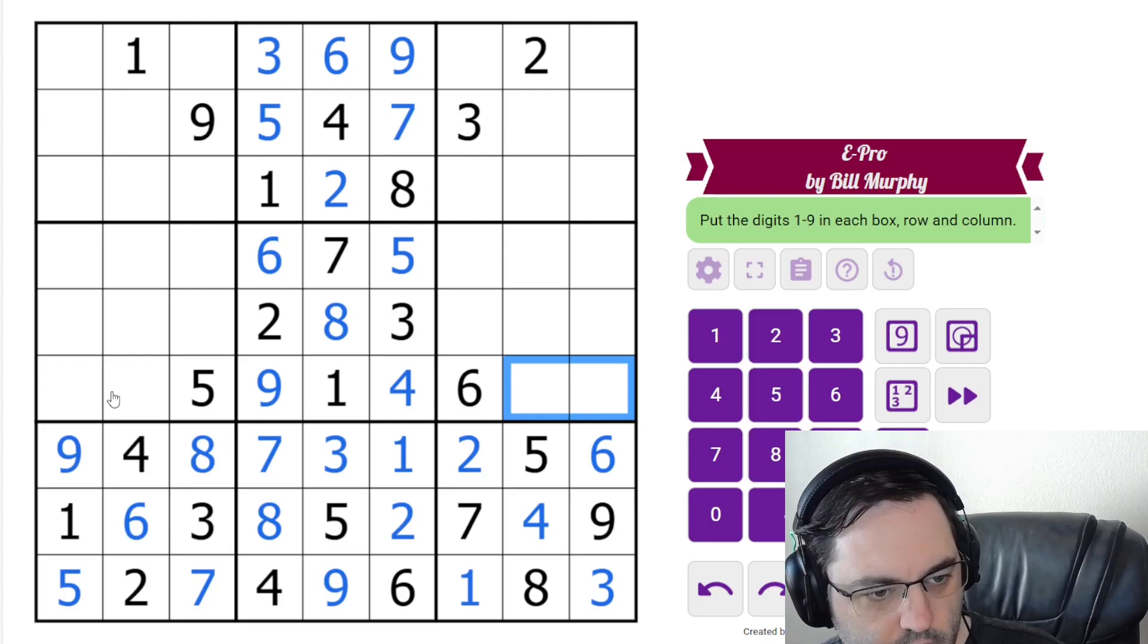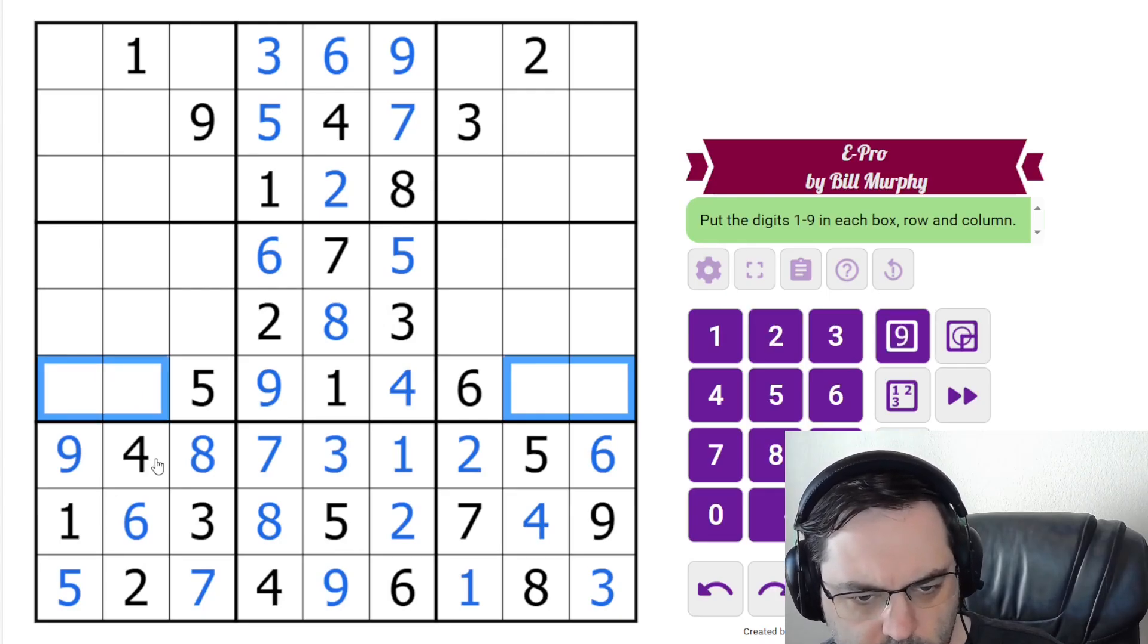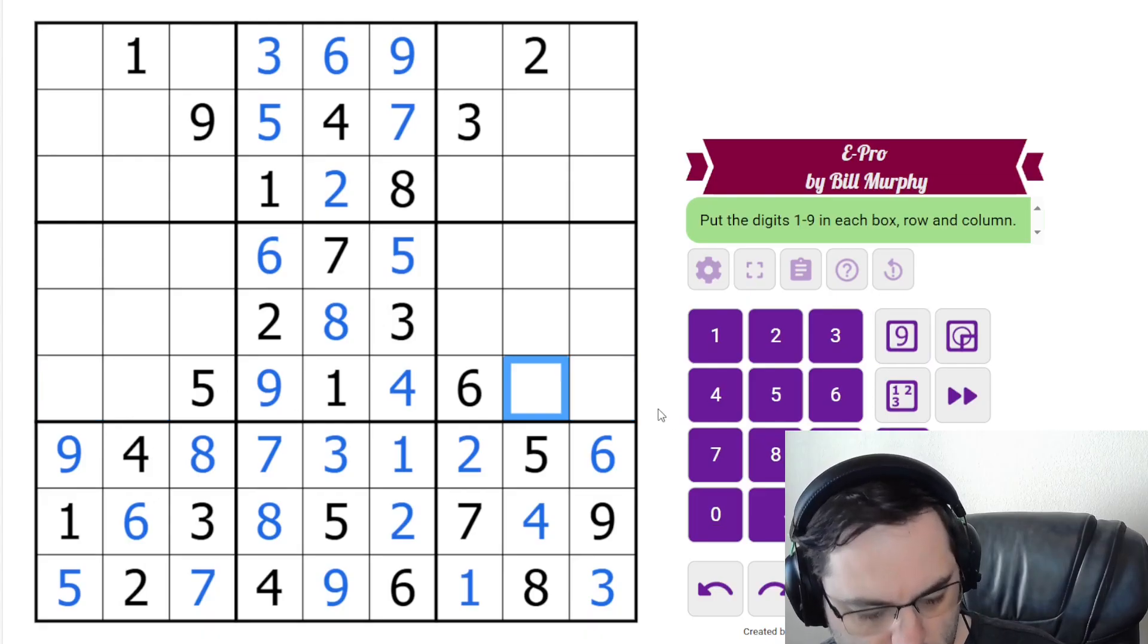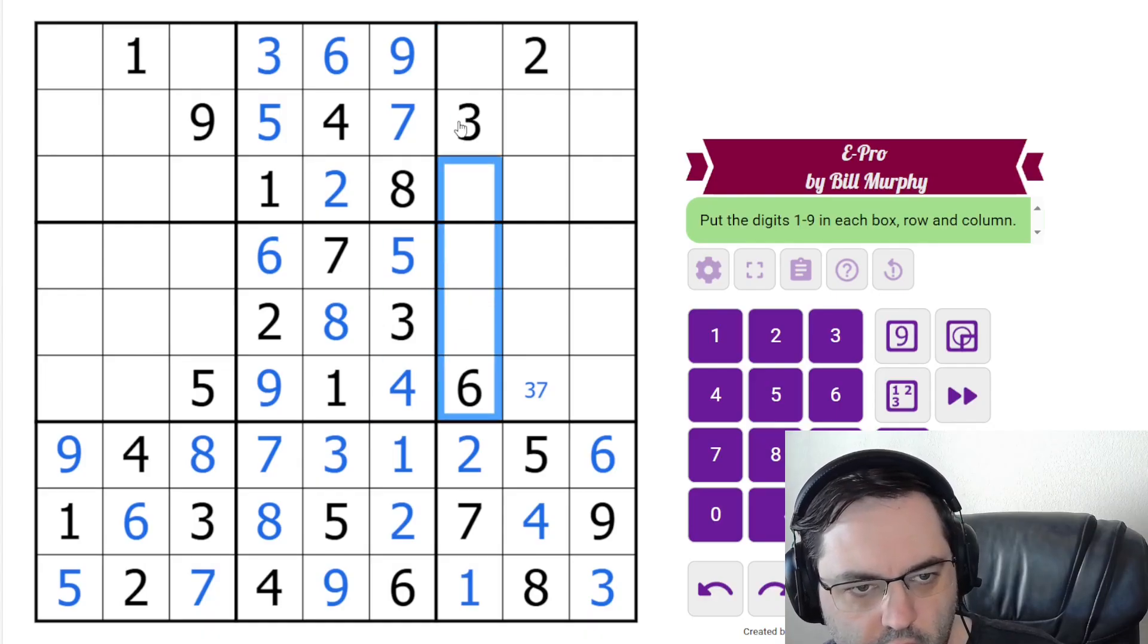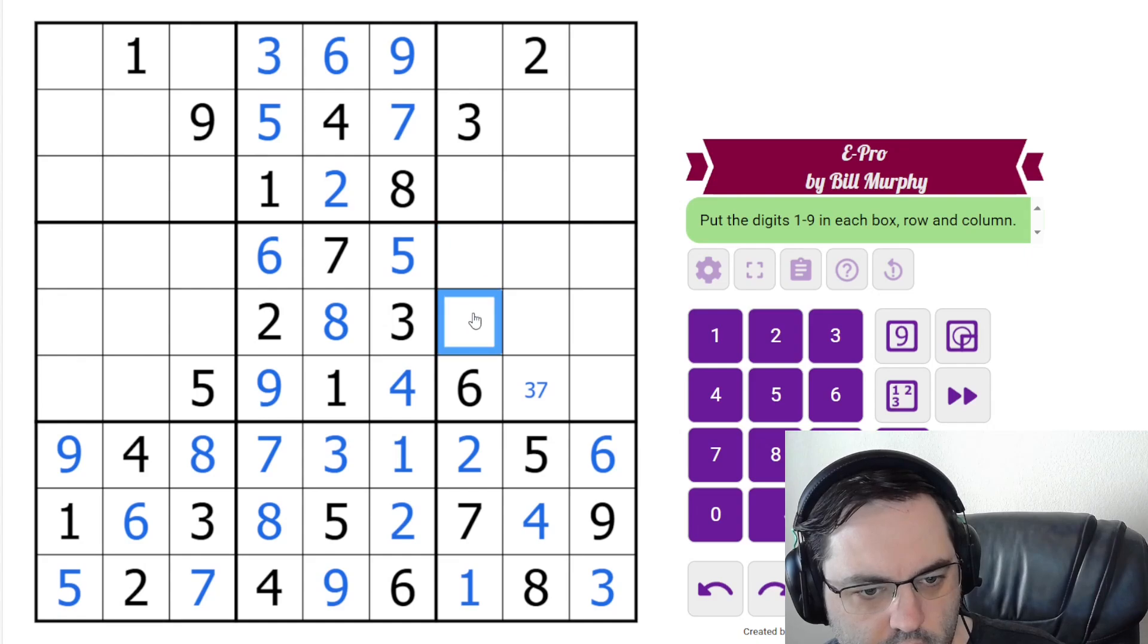So let's look at this row next, I guess. We need 2, 3, 7, 8. It's actually not that restricted. Maybe this column. We need 4, 5, 8, 9. That's still not that restricted.